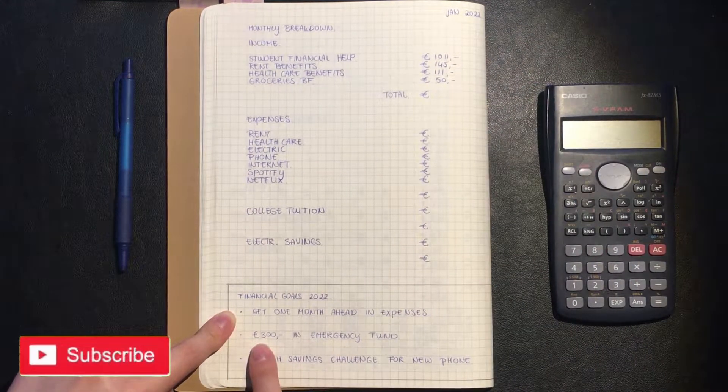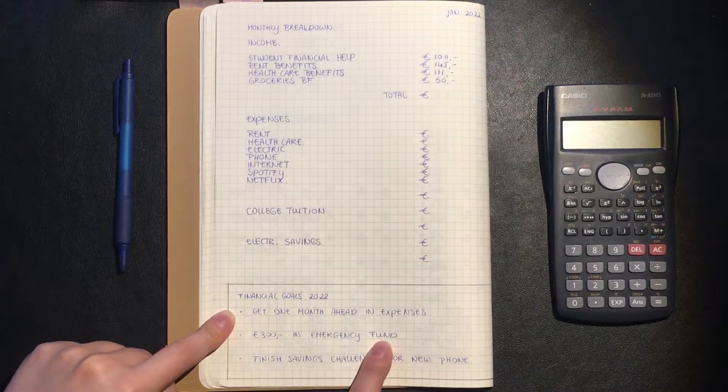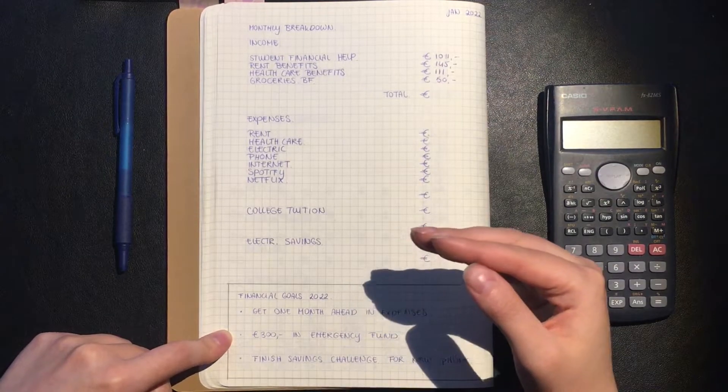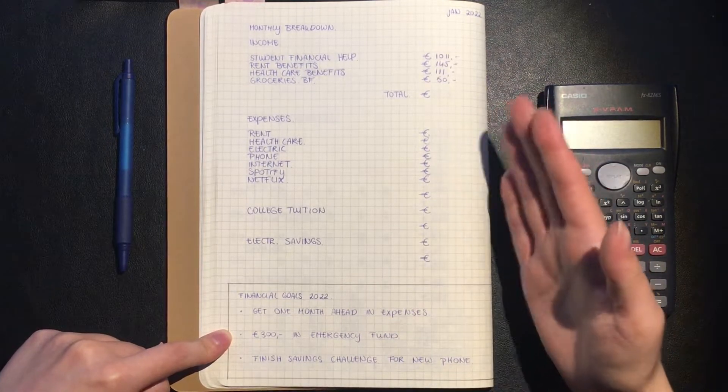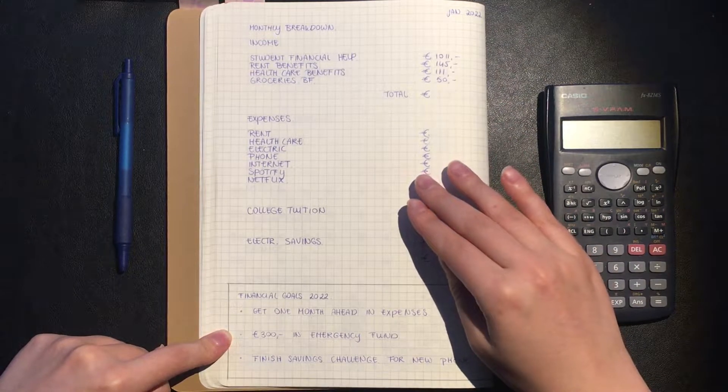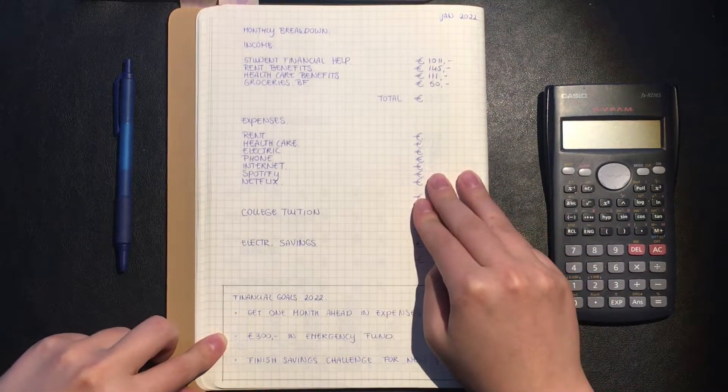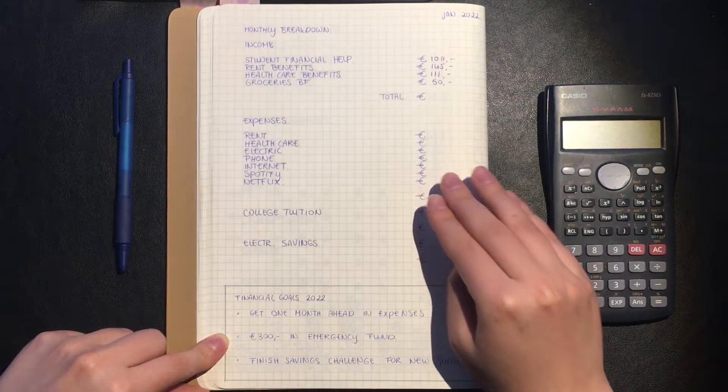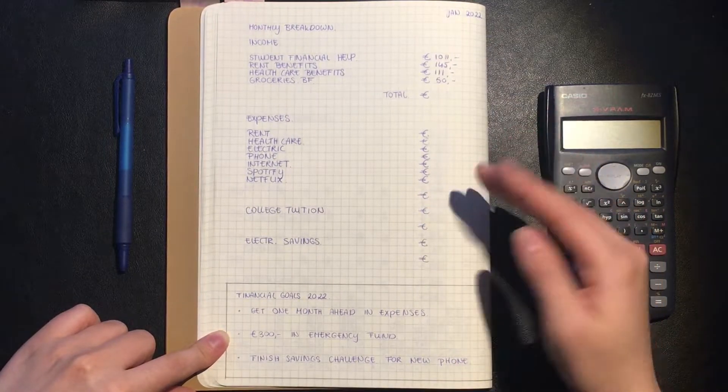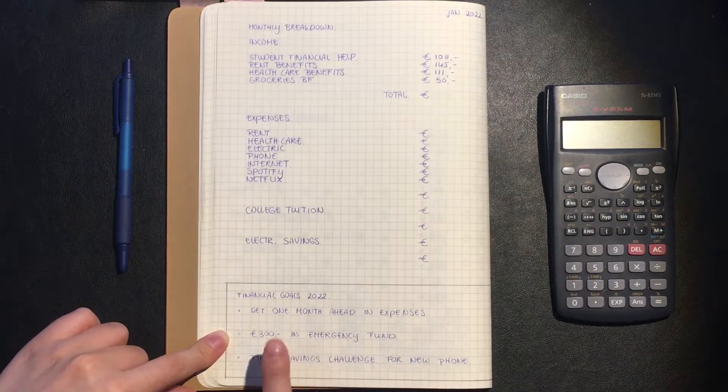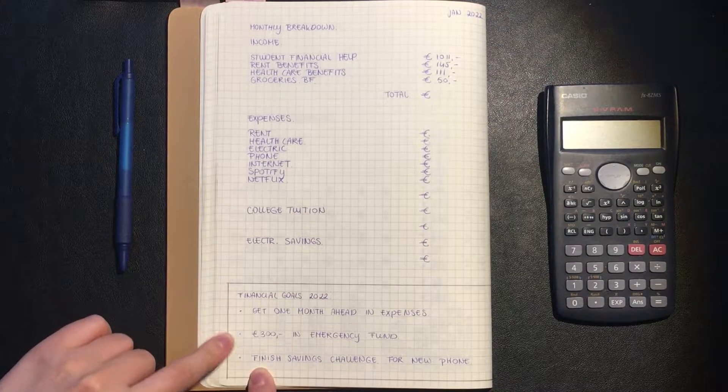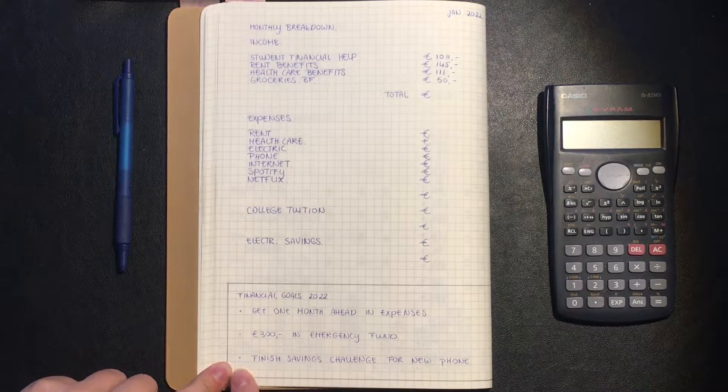Next up is 300 euros in my emergency fund. Because I stuff monthly 20 euros, I know that I won't save up for my initial thousand, so I'm just gonna try to get 300.